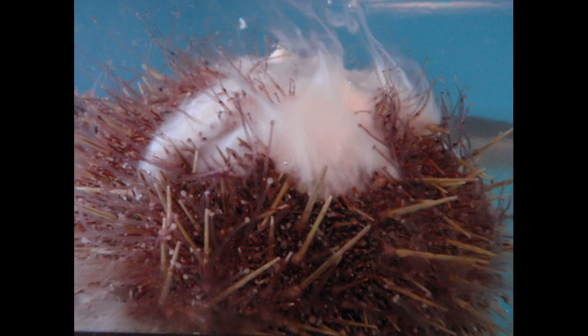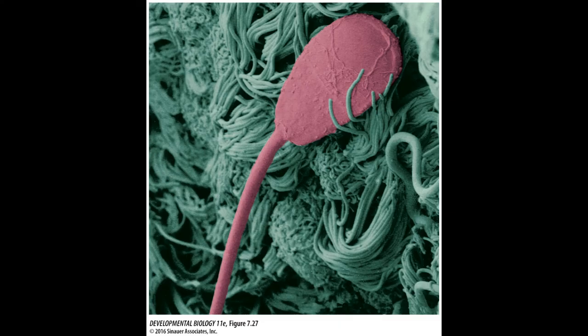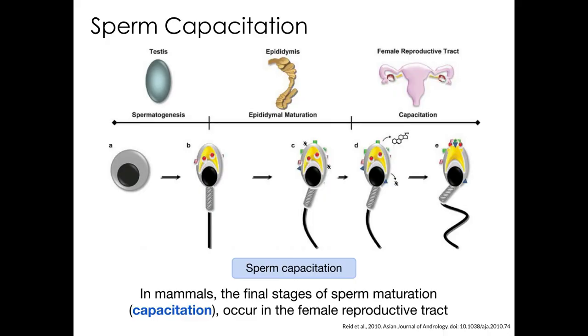In the sea urchin, the sperm released into the environment are mature and able to fertilize the egg. However, that's not the case for mammals — the sperm that are ejaculated are not able to fuse with the egg; they're not fully mature. The last stage of their maturation happens within the reproductive tract of the female, sometimes taking a couple of days. These sperm need to undergo a series of changes collectively called capacitation, which will allow them to bind to and fuse with the egg.